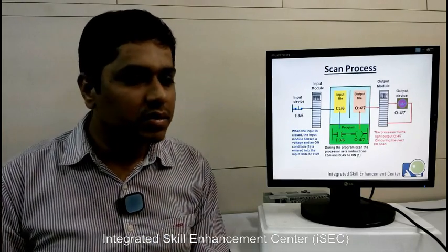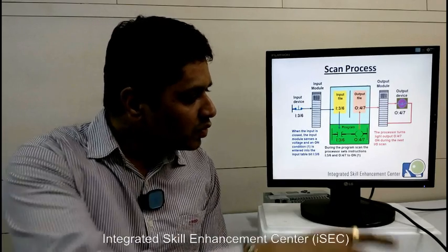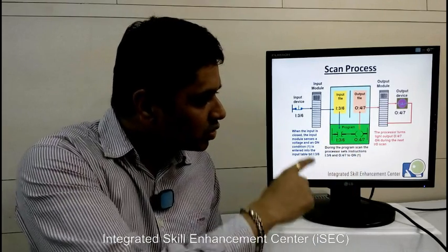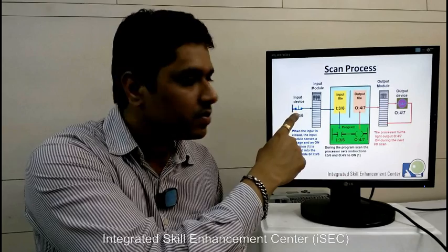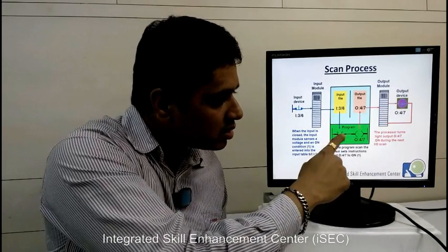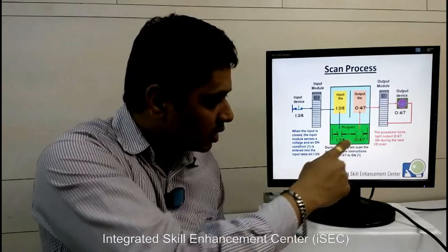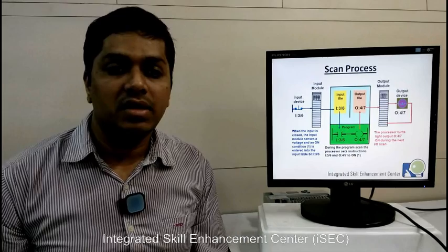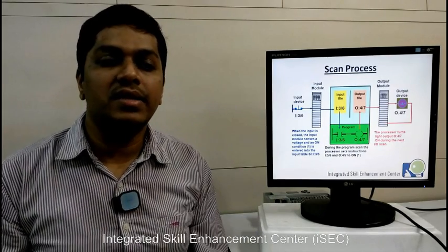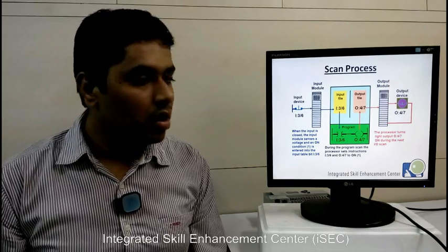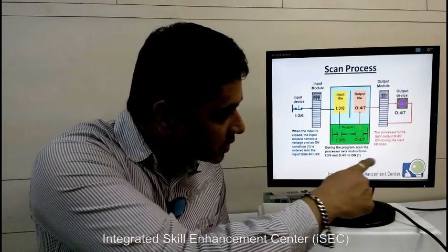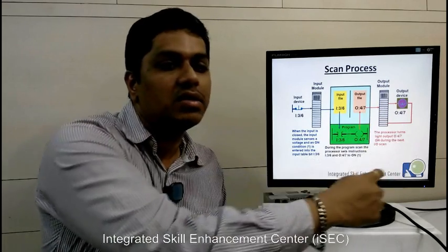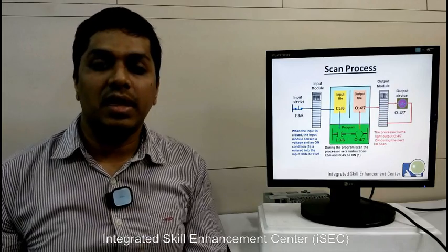This same logic is written here as ladder logic — this is a NO contact and this is an output. So once it is written that when the switch is pressed you have to turn on the bulb, when the input is closed the input module sends a voltage and a condition 1 is entered into the input table. During the scan cycle the program executes the task as per the written program, and in the next scan cycle it turns on the output device, which is the bulb.